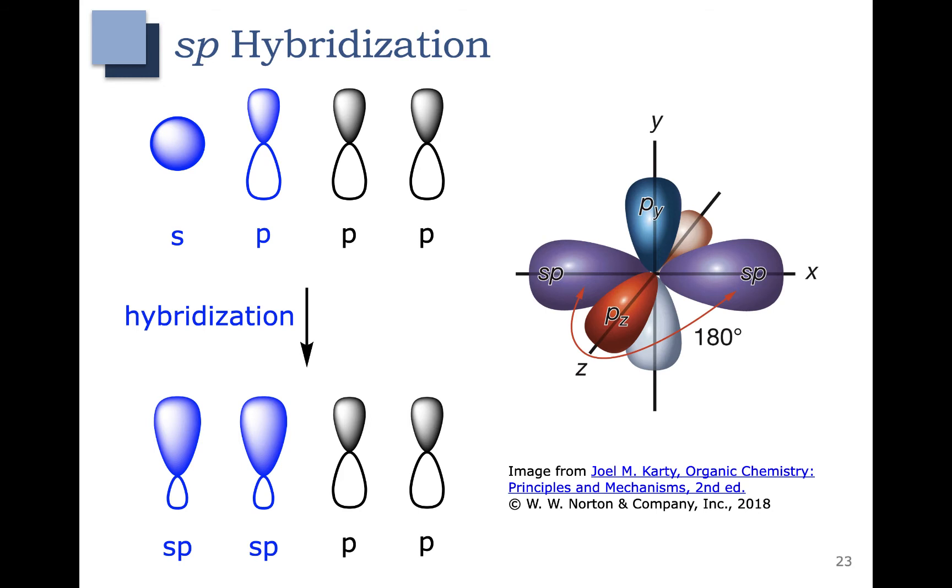Here's what those orbitals look like when you put them all together. You can see one sp orbital over here on the left and another on the right, and those lobes again are not drawn in. You can see that they sit about 180 degrees apart, and this is how we get that linear geometry.